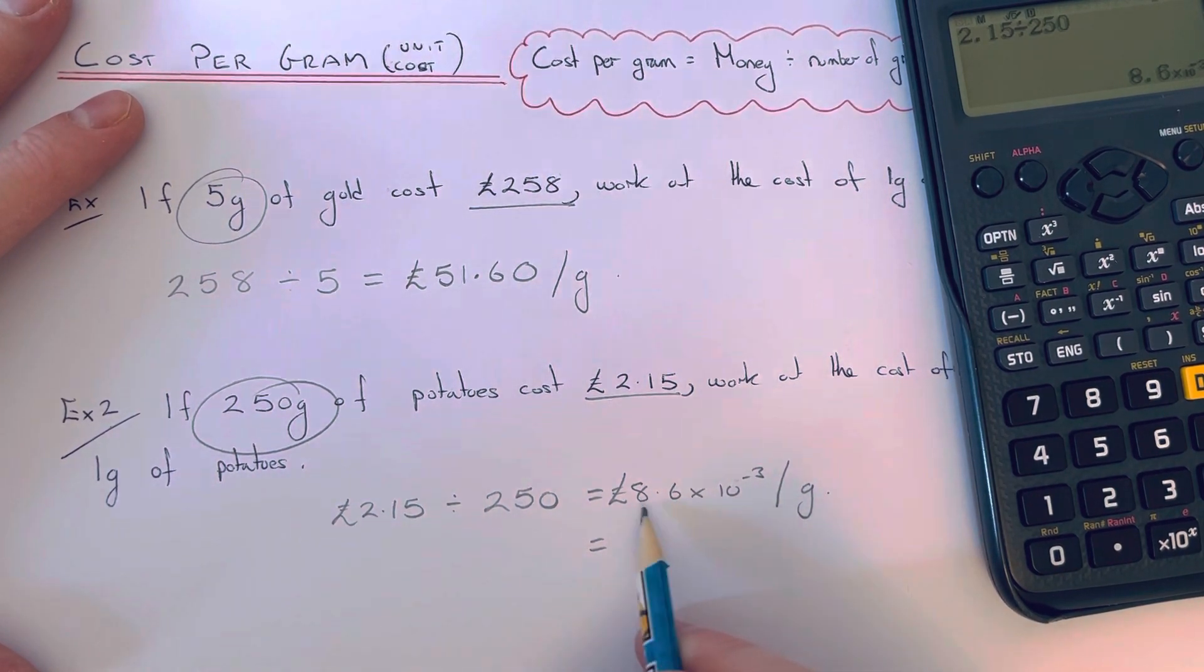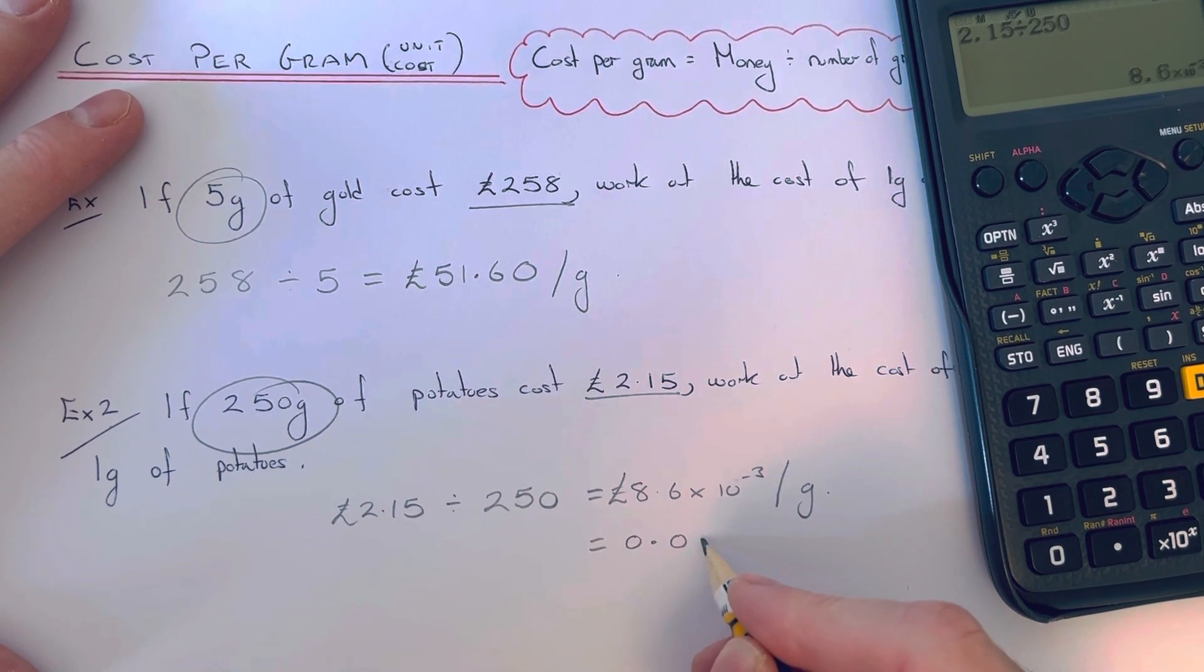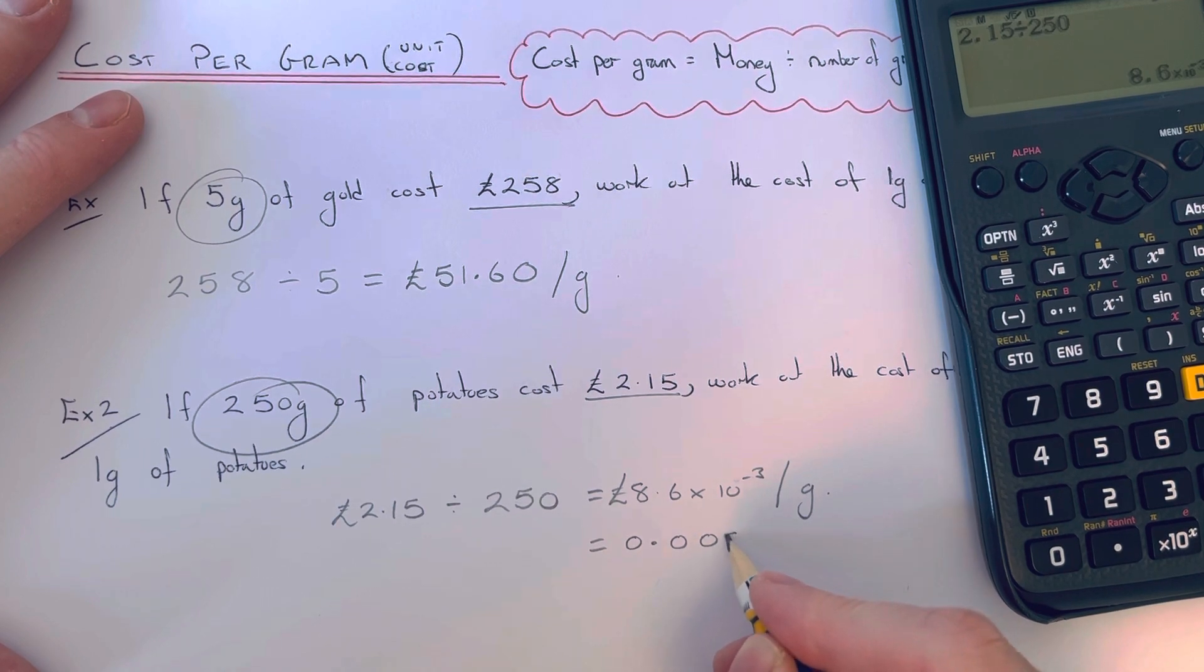It's come out in standard form because the answer was really small. We can write that as a normal decimal number, so it'd be £0.0086.